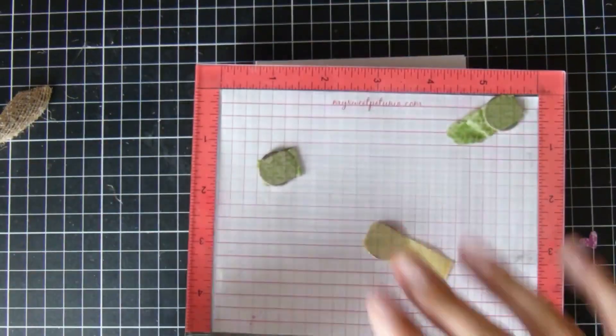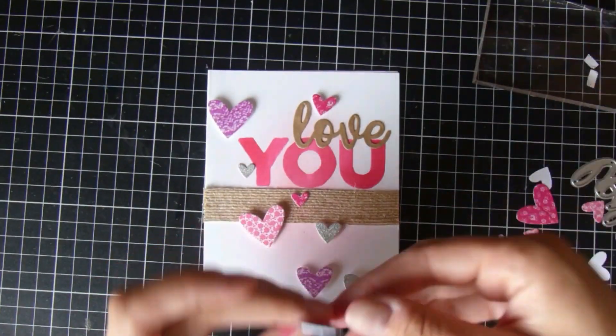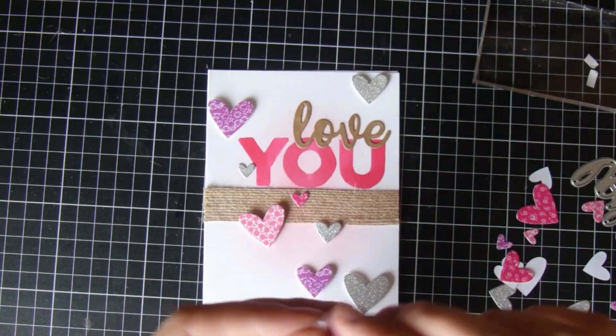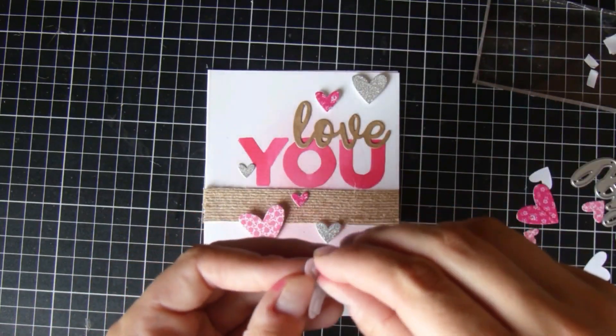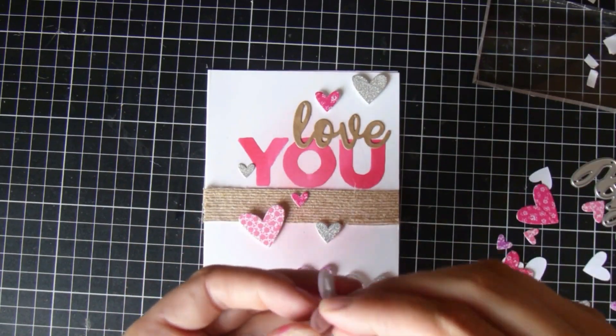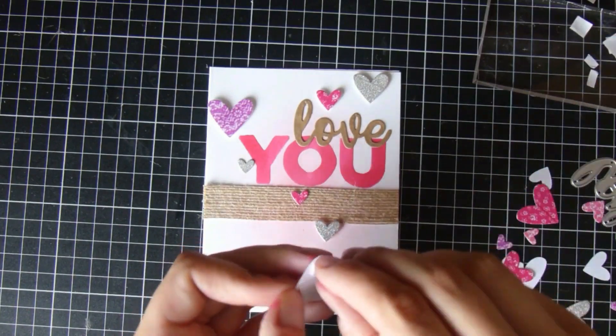I have put some with foam squares on the top—kind of just the bigger ones really. I put foam squares on the back of them, and then I have just adhered the little ones down flat with the matte medium. So I had them kind of all placed out where I wanted them to go.